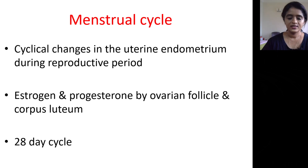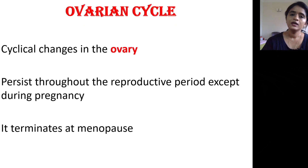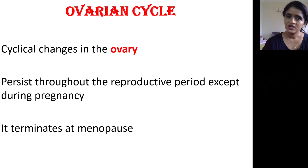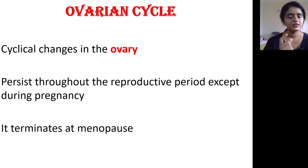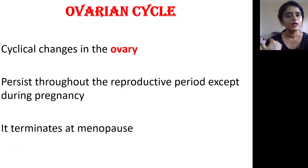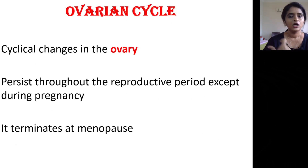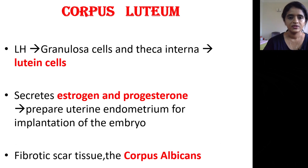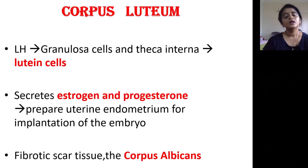The menstrual cycle in a normal individual is roughly a 28-day cycle. The ovarian cycle also persists throughout the reproductive period except during pregnancy — once a lady gets pregnant, there is no ovulation, so the ovarian cycle is absent during that period. It is said to terminate at menopause. Corpus luteum is a very important structure to understand.